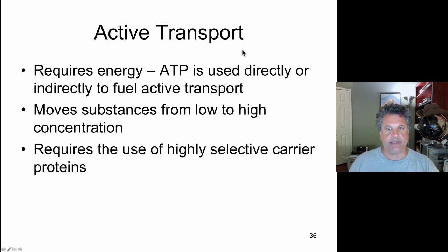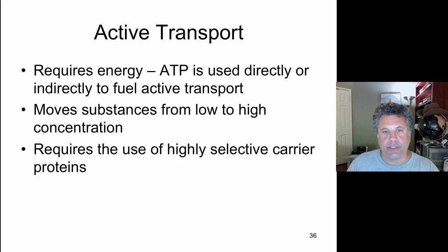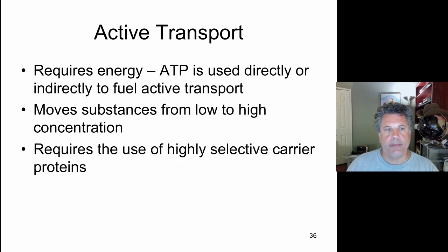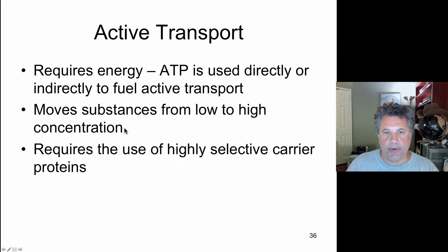Now we're ready to move on to active transport. Thus far we've been considering passive transport — both osmotic flow of water and the passive transport driven by the flow of substances across a membrane down their concentration gradients, where no net input of energy was required. However, in active transport we are moving substances from a low concentration to a high concentration. This is thermodynamically unfavorable and requires the input of energy derived from ATP, the energy currency molecule of the cell, which can be used either directly or indirectly to fuel the active transport.